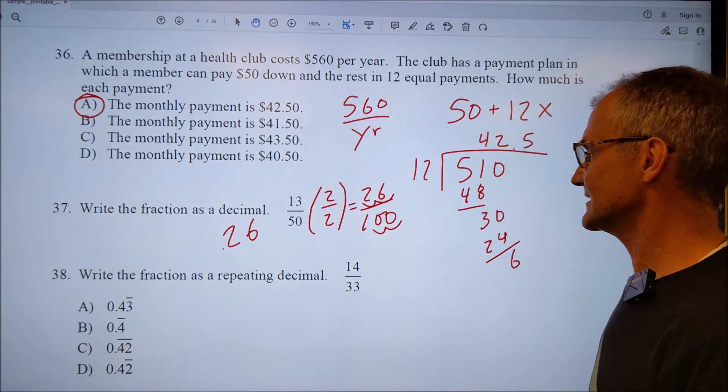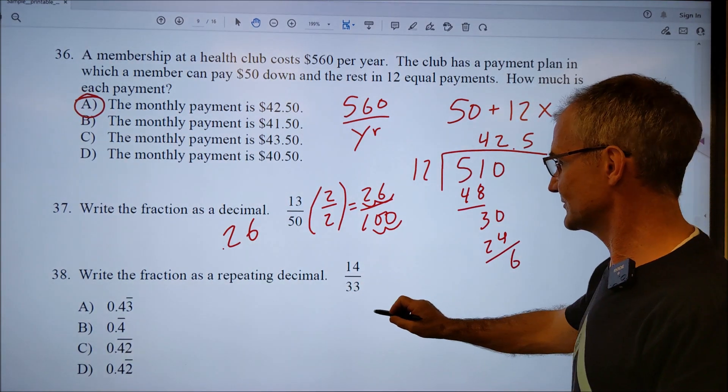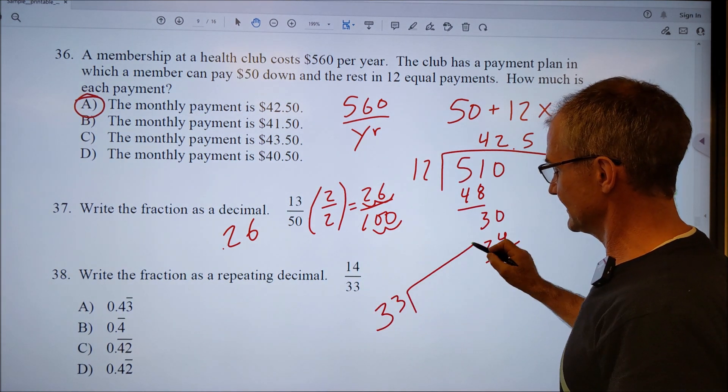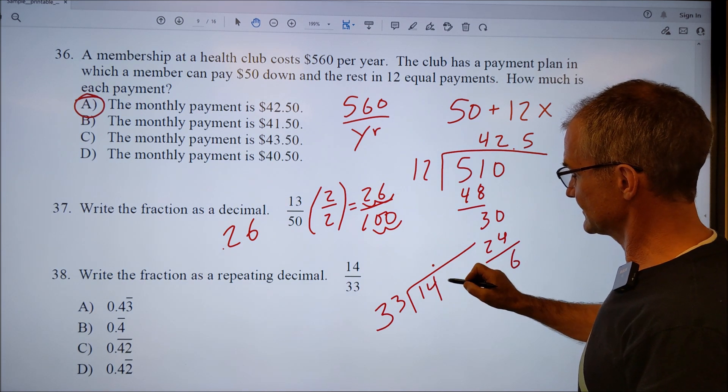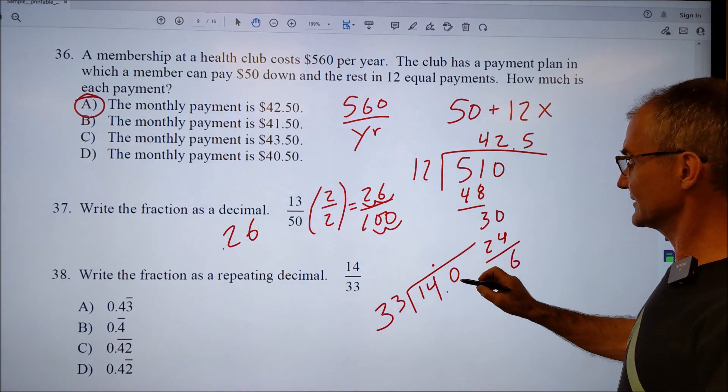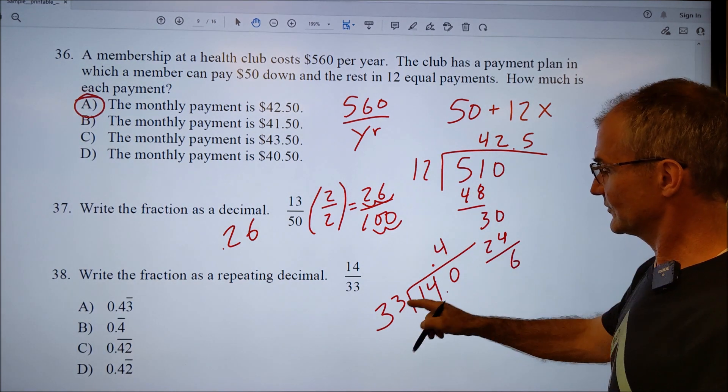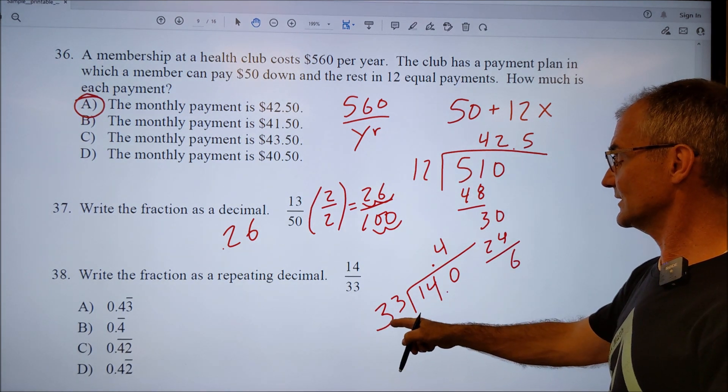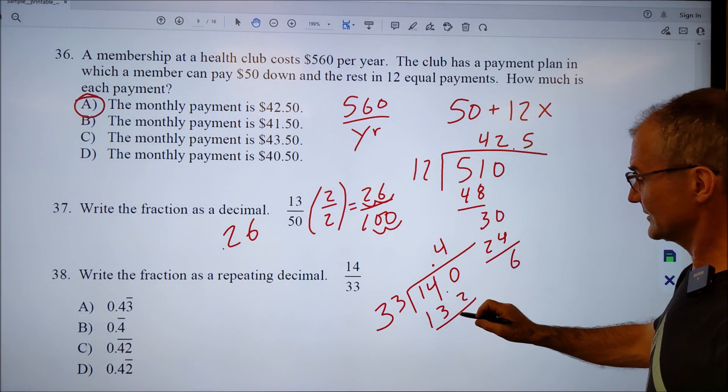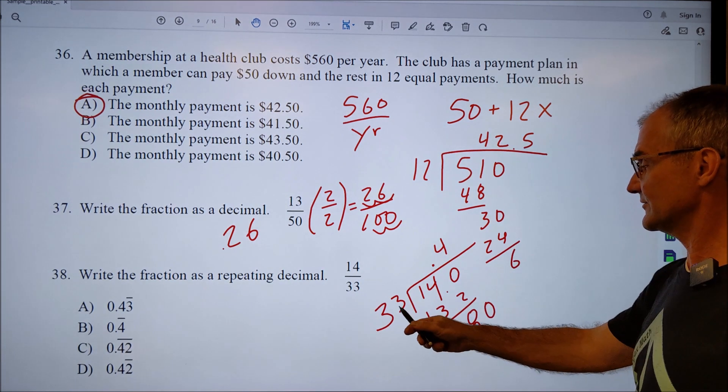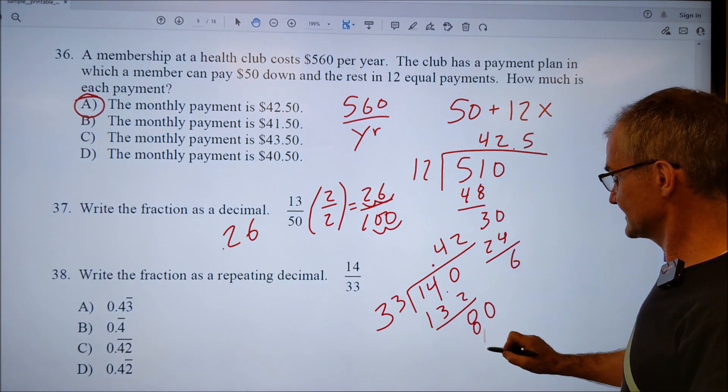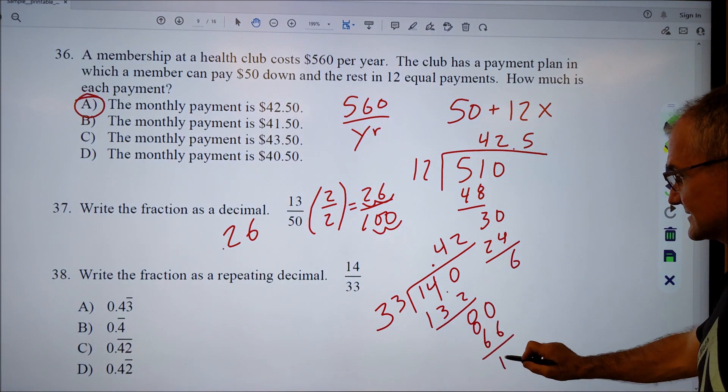Thirty-eight, write the fraction as a repeating decimal. So the best way to do that is multiply it out. Well, I think this fraction is falling over, so I want to do thirty-three into fourteen. Well, it doesn't go in a fourteen, so I've got to put a decimal there. Thirty-three into a hundred and forty, it's going to go in there four times. Four times three is twelve, or a hundred and twenty, plus twelve, a hundred and thirty-two. Eight. One forty minus thirty-two is eight. Bring down the zero. Thirty-three and the eighty goes in there twice to give me sixty-six. Eighty minus sixty-six is fourteen.